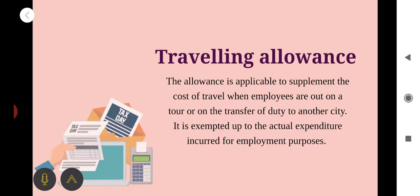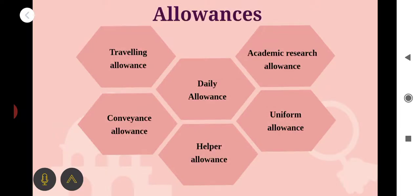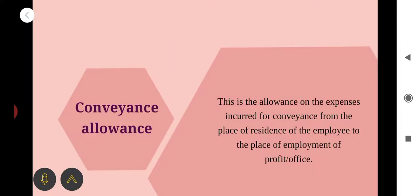First, travelling allowance — this allowance is applicable to supplement the cost of travel when employees are out on a tour or on transfer of duties to any other city. It is exempted up to the actual expenditure incurred by the employee. Next, conveyance allowance — this is an allowance for expenses incurred for conveyance from the place of residence to the place of employment or office.